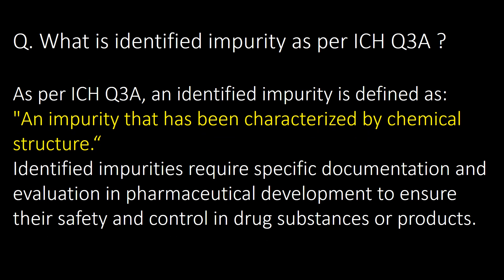What is an identified impurity as per ICH Q3A? As per ICH Q3A, an identified impurity is defined as an impurity that has been characterized by chemical structure. Identified impurities require specific documentation and evaluation in pharmaceutical development to ensure their safety and control in drug substance or products.